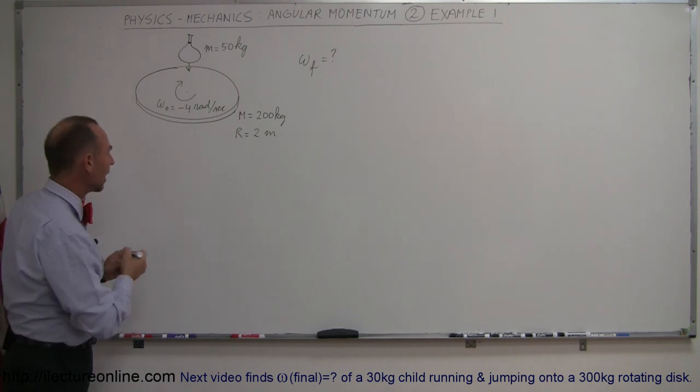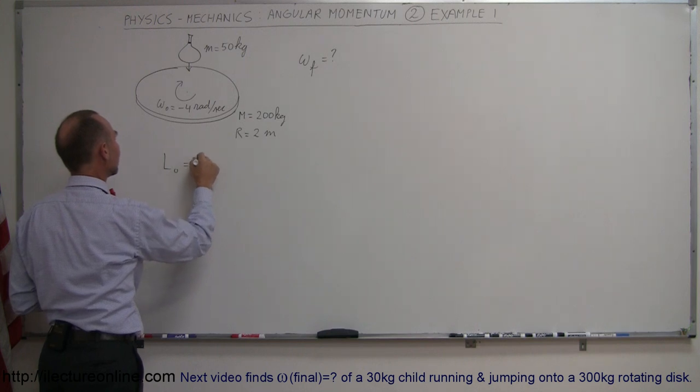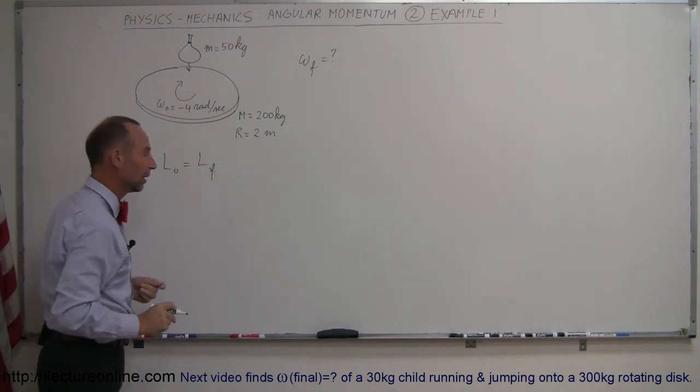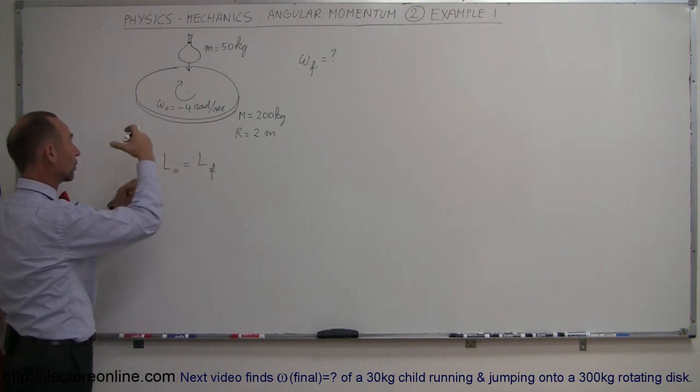Start off with saying that the initial angular momentum equals the final angular momentum. So what we're going to do is figure out all the angular momentum of all the objects before the collision.